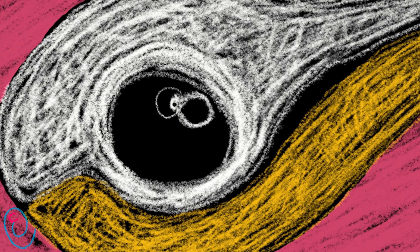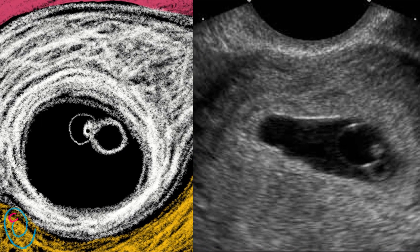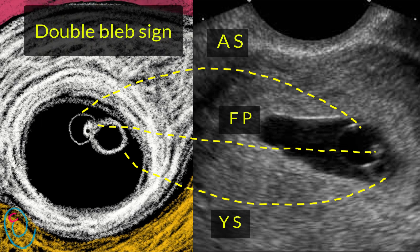Sometimes the amniotic sac is seen at the same time as the yolk sac. This picture of the amniotic sac, yolk sac, and the fetal pole in between is known as the double blip sign.